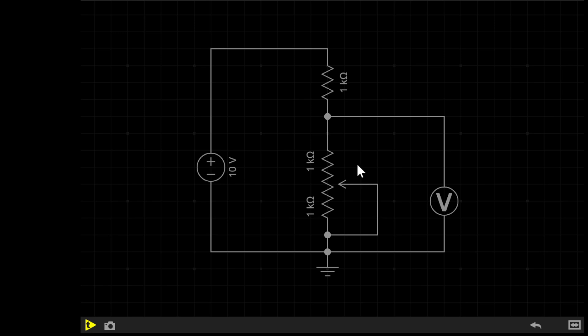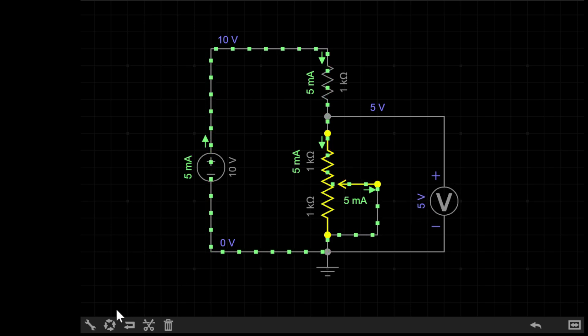However, if we replace this resistor with a 2k potentiometer and simulate the circuit, with the wiper in the center, there's still about 5 volts across the voltmeter. However, now, if we move the wiper...